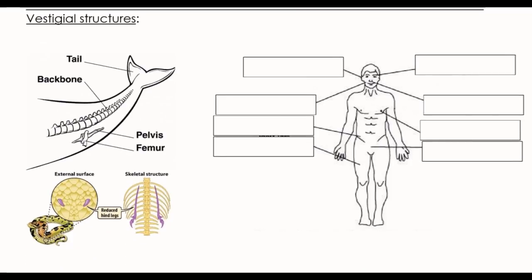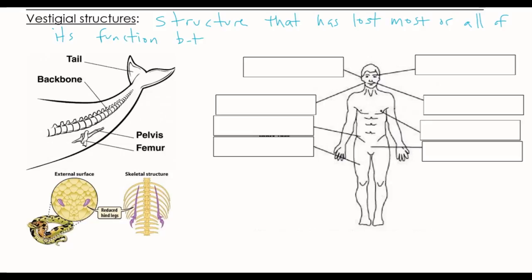The last type of structure we're going to look at is a vestigial structure. I think this is one of the biggest things that points to evolution. Vestigial structures are structures that have lost most or all of their functions but are still present — something that really doesn't have a function anymore, but maybe at one time it did. These are kind of the remnants of what all these creatures used to be in the past.